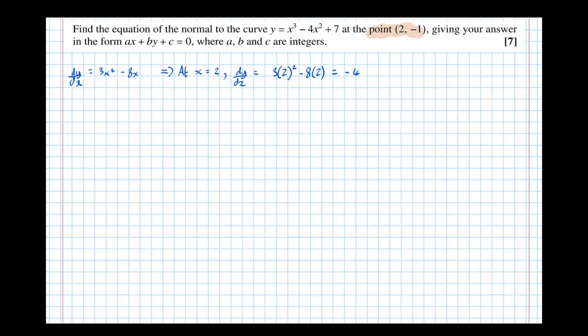So that's the gradient of the tangent, therefore the gradient of the normal is the negative reciprocal of -4, which is 1/4. Flip it to get -1/4, then negate it, change the sign, to get 1/4.